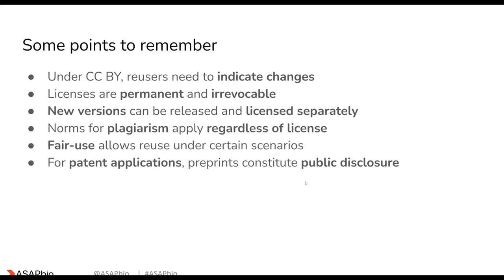Here are some points to remember. Under CC BY, re-users are required to indicate what they've changed, so that their edits won't be mistakenly attributed directly to you. Any licenses from Creative Commons that you apply are permanent and irrevocable, but new versions of the preprint can be released and licensed with a separate license. Norms for plagiarism in the community apply regardless of what license you've chosen, and the doctrine of fair use allows reuse under certain scenarios — for example, including figures in an academic talk. For patent applications, remember that preprints constitute public disclosure.